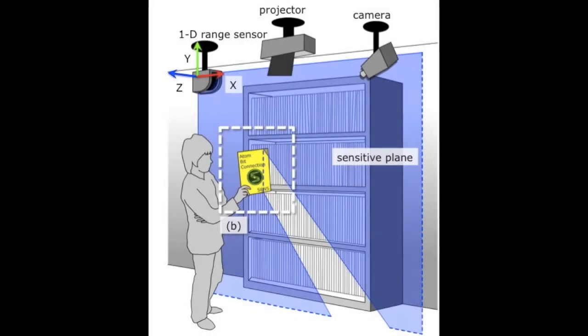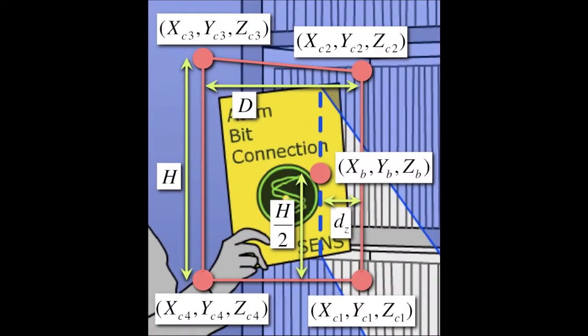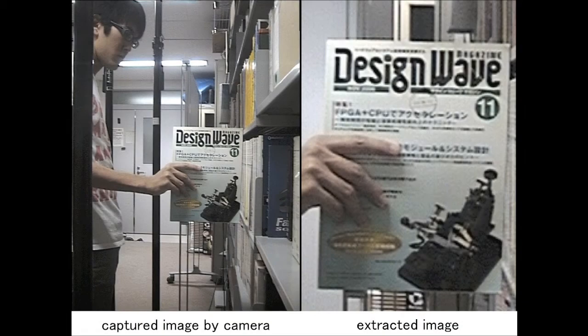The system extracts the cover image of a stored book from the image captured by the video camera. First, the system computes the 3D positions of the four corners of the rectangle which covers the detected book based on the dimension of the bookshelf. Second, the 3D positions are transformed to 2D camera positions by perspective transform.